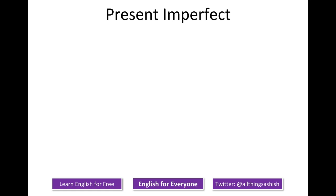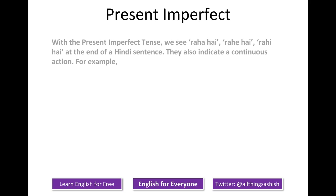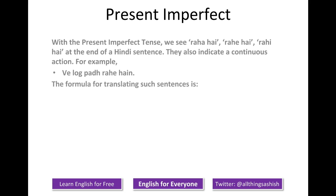Let's look at present imperfect, also known as present continuous tense. With the present imperfect tense, we see 'raha hai', 'rahe hai', 'rahi hai' at the end of a Hindi sentence. They indicate a continuous action. For example: 've loog padd rahe hai'. The formula for translating such sentences is: subject plus verb to be plus verb plus -ing.